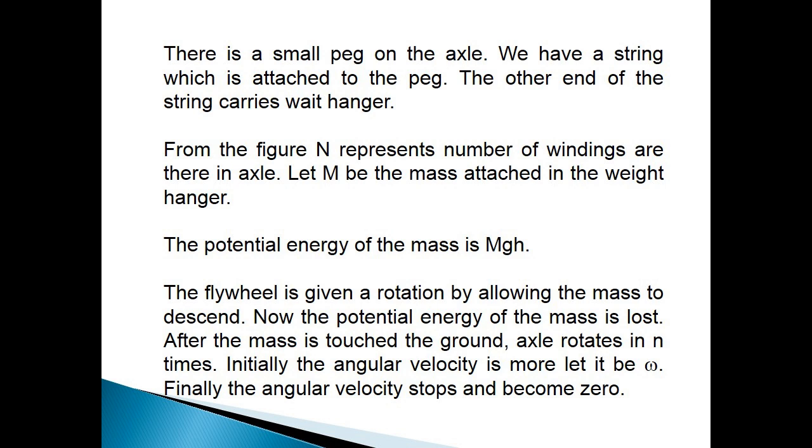The potential energy of the mass is Mgh. The flywheel is given a rotation by allowing the mass to descend. Now, the potential energy of the mass is lost. After the mass is touched to the ground, axle rotates in small n number of times. Initially, the angular velocity is more and let it be omega. Finally, the angular velocity stops and becomes zero.